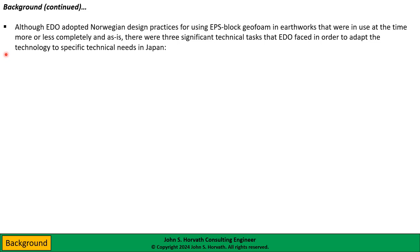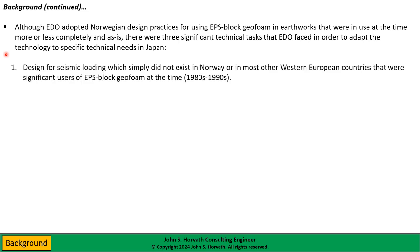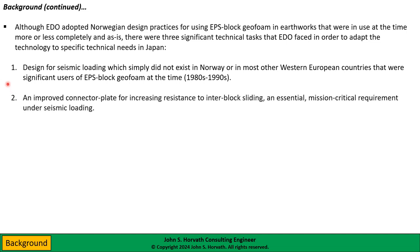There were three significant technical tasks that ETO faced in Japan to adapt the technology to specific local needs. At the top of the list was designing for seismic loading, which simply did not exist as a requirement in Norway or most Western European countries using EPS block geofoam at the time. ETO also found a need to improve the connector plate for increasing shearing resistance to inter-block sliding — an essential, mission-critical requirement under seismic loading.